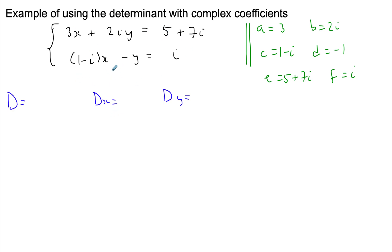The determinant is always AD - BC. We have AD minus BC, so you're going to take 3 times -1 minus 2i times (1-i).